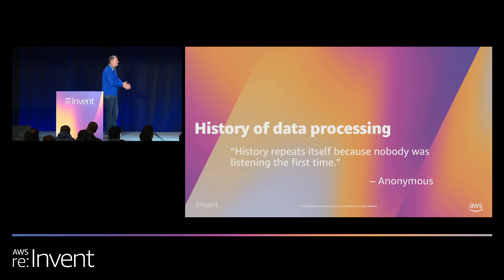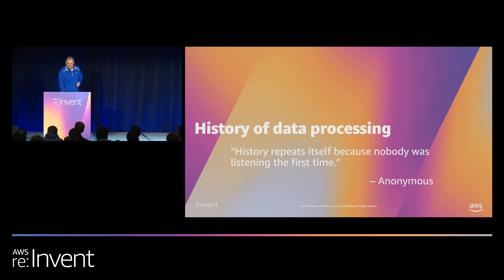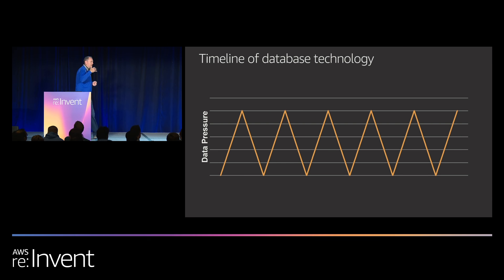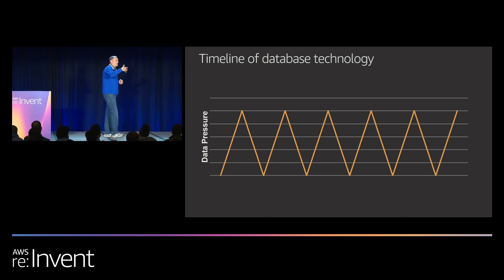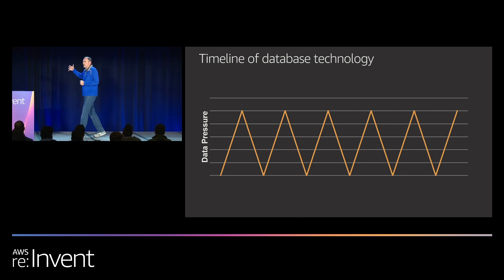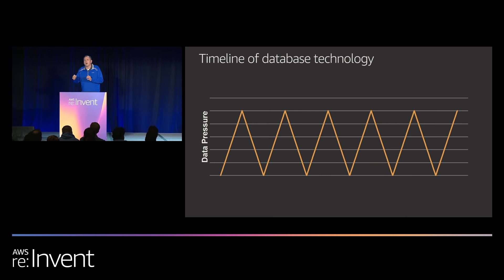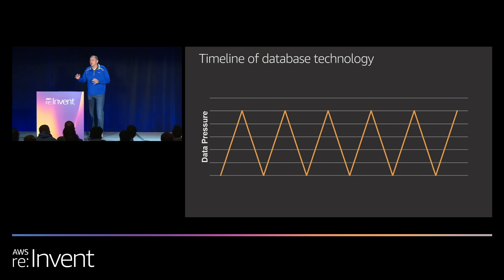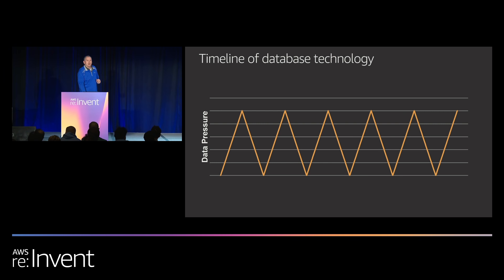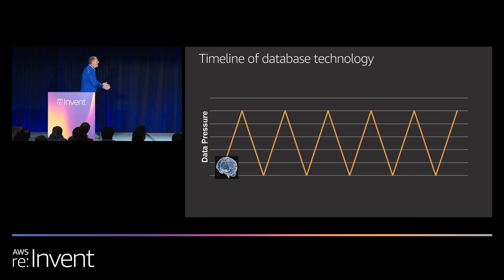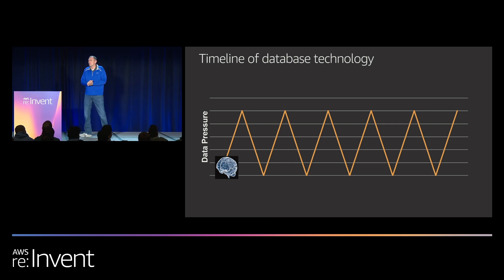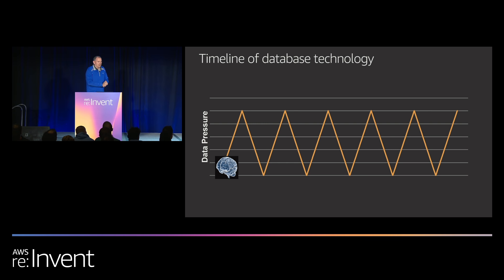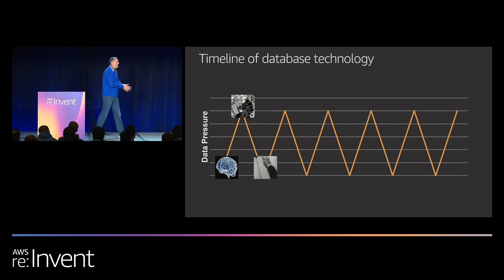Why are we looking at this new technology when relational technology has worked so well for so long? To understand this, we need to see that the history of data processing is a series of peaks and valleys of data pressure. Data pressure is what we're asking the system to do and how fast and how cheaply it's happening. If it's not happening fast enough or cheaply enough, we have a high data pressure situation — a technology trigger — and we invent new things to fix it. The first database we had was the one between our ears: highly available when eyes are open, but not durable, fault tolerance questionable, a single-user system.